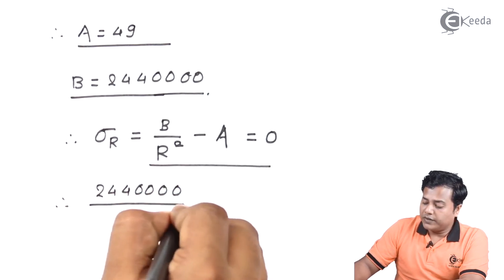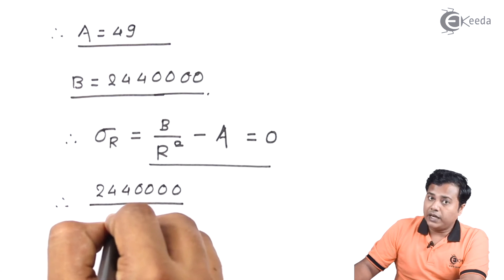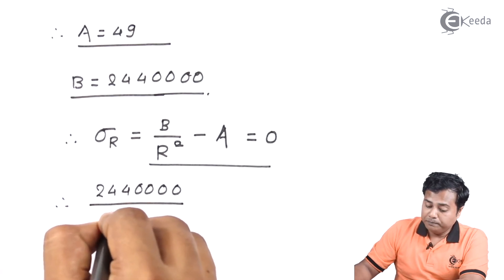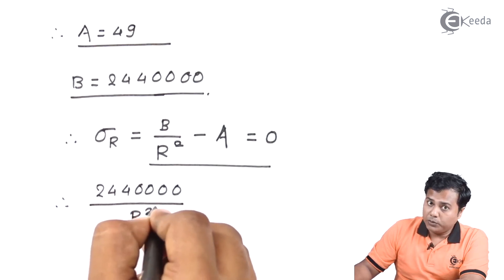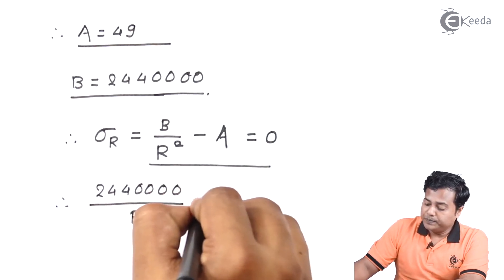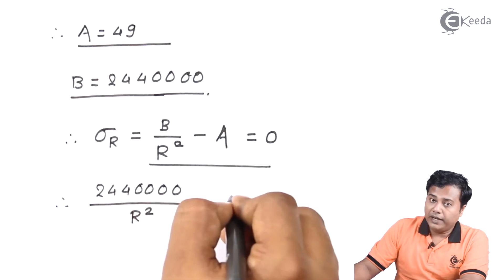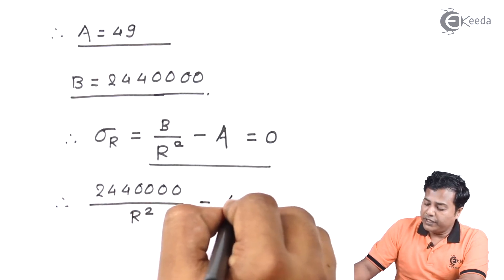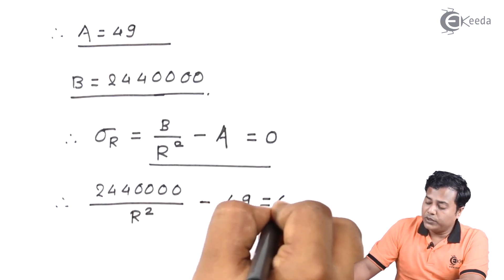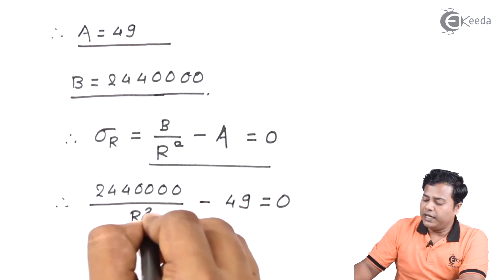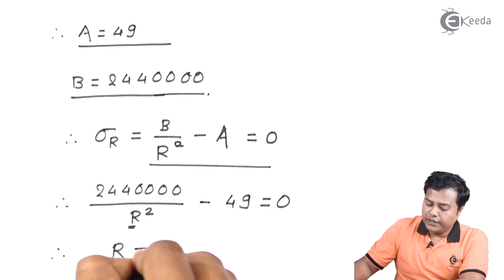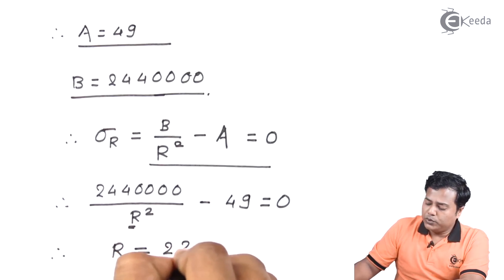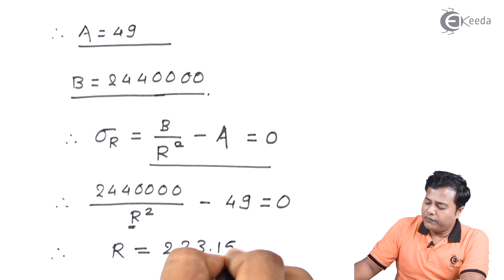If I shuffle this I have only one unknown parameter and therefore the value of R I can find out is 223.15 mm.